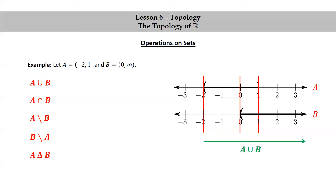A union B consists of everything starting at negative 2, but not including negative 2, onward to the right. So that's the infinite open interval negative 2 to infinity. The intersection of A and B consists of the real numbers between 0 and 1. Notice that 0 will not be included because it's open in B, and 1 is included because it's included in both A and B. So it's the half-open interval 0 to 1, not including 0, but including 1.